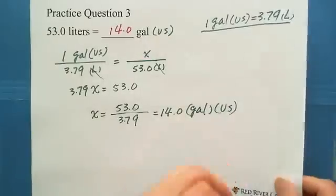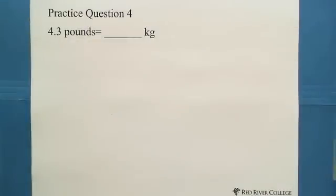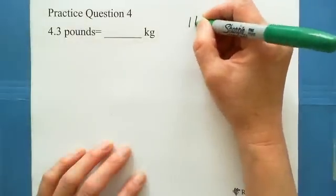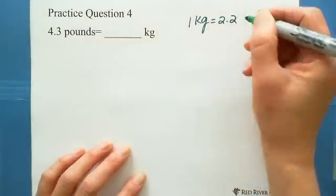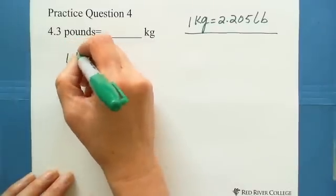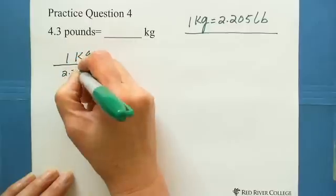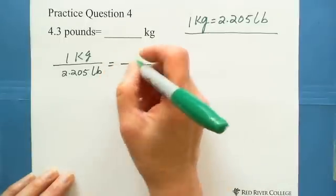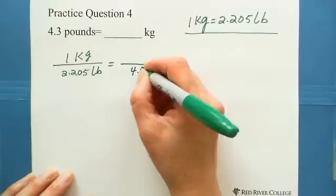The next question is 4.3 pounds equals how many kilograms. This is a very useful conversion, mostly when you go shopping in stores. They put a sign showing how much for 1 kilogram, how much for 1 pound. As we know 1 kilogram equals about 2.2 pounds. We make it more accurate, 1 kilogram equals 2.205 pounds. Set up ratio proportion, 1 kilogram equivalent to 2.205 pounds. On the other side you set the pound on the bottom, 4.3 pounds.